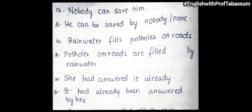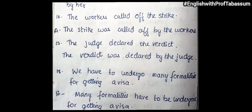'Nobody can save him' becomes 'He can be saved by nobody' — or we can also write 'none'; both are correct. 'Rainwater fills potholes on roads' becomes 'Potholes on roads are filled by rainwater.' 'She had answered it already' becomes 'It had already been answered by her.' 'The workers called off the strike' becomes 'The strike was called off by the workers.'